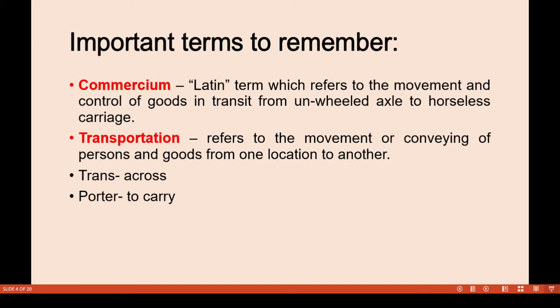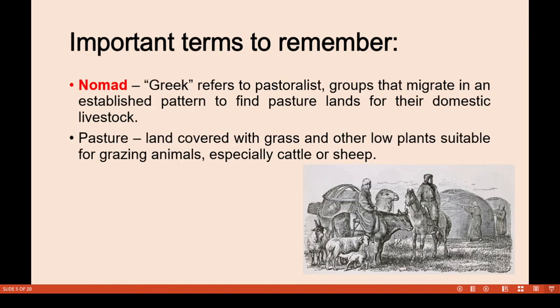Another term to remember is 'nomad.' In Greek, a nomad refers to pastoralist groups that migrate in an established pattern to find pasture lands for their domestic livestock. Pasture is a land covered with grass and other low plants suitable for grazing animals, especially cattle or sheep. This illustration shows a nomad.